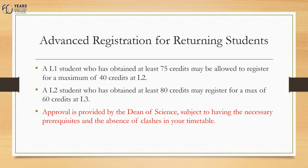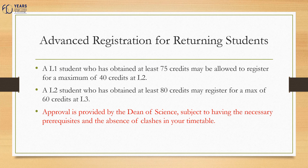If you are a returning student, you may apply for advanced registration through the Faculty Office, providing you meet the following criteria. A level one student who has obtained at least 75 credits may be allowed to register for a maximum of 40 credits at level two. A level two student who has obtained at least 80 credits plus a full complement of level one modules may register for a maximum of 60 credits at level three. All approval of advanced registrations is provided by the Dean of Science, subject to you having the necessary prerequisites for the modules for which you apply, and in the absence of clashes on your timetable.